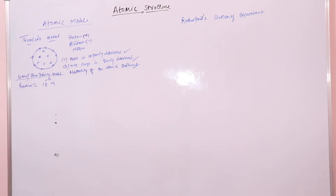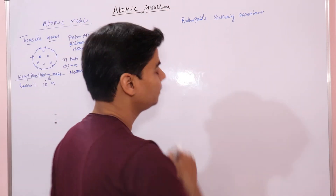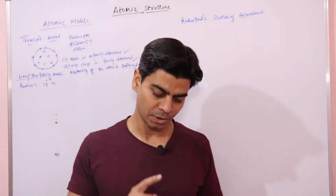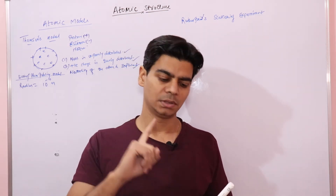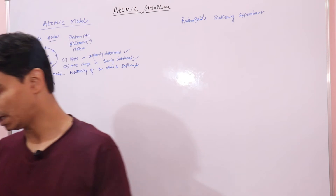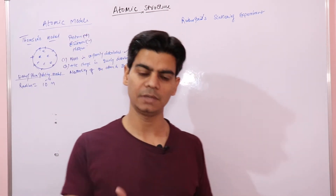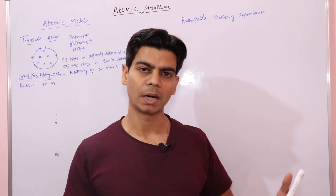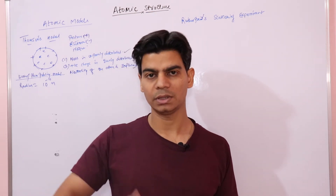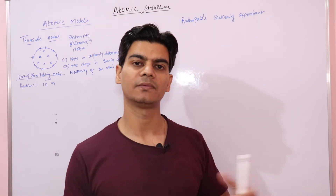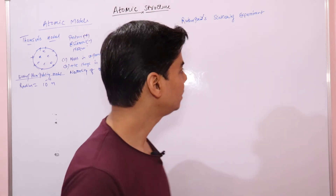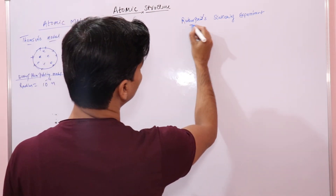Now we will go through Rutherford's scattering experiment, which is a very important experiment. Rutherford, along with his students Hans Geiger and Ernest Marsden, took thin foils of metals like gold and silver and bombarded them with alpha particles. In this experiment, they bombarded thin sheets of gold metal with alpha particles.